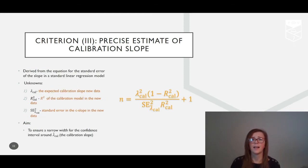The third criterion targets a precise estimate of the calibration slope. As the C-slope is essentially the slope parameter from a linear regression model, we derive this criterion from the standard error of such a slope. In terms of choosing the value for the C-slope, a reasonable starting point is to assume good calibration with a slope of one and a zero intercept in the calibration model, such that R-squared cal would equal the adjusted R-squared estimate in the model development study.